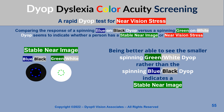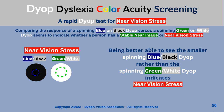Being better able to see the smaller spinning green on white dyop rather than the spinning blue on black dyop indicates a stable near image. Being better able to see the smaller spinning blue on black dyop indicates near vision stress.